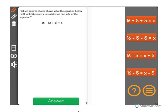Which answer choice shows what the equation below will look like once x is isolated on one side of the equation?